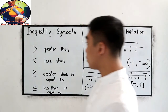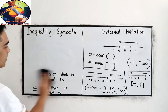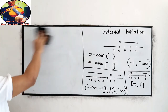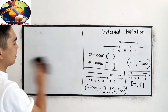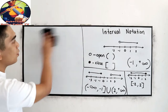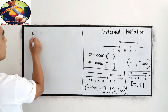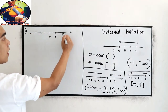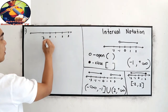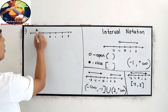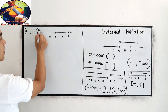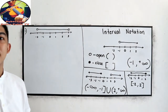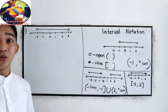Now I want you to try the following example. Write the following into interval notation. For number 1, we have a number line open at negative 2 then open at positive 3. You can pause the video if you want to try this one.